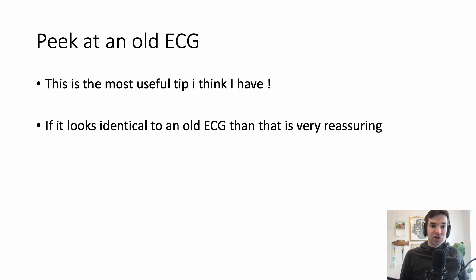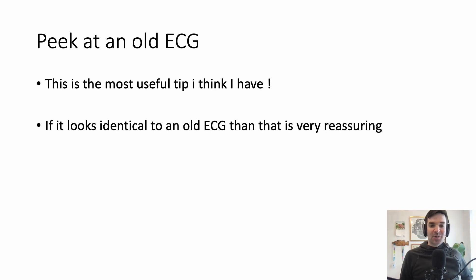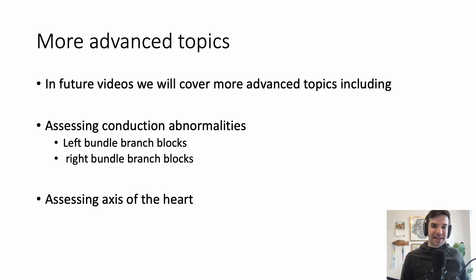The last part of the DRIP mnemonic is to take a peek at an old ECG — this is the most useful tip I have. If today's ECG looks just like the ECG from yesterday, two days ago, or a month ago, you're already less worried. There are more advanced topics I haven't covered here, like conduction abnormalities, bundle branch blocks, and axis of the heart — I thought that was all overkill. But if you'd like more videos, please leave a comment on what you'd like me to capture next.